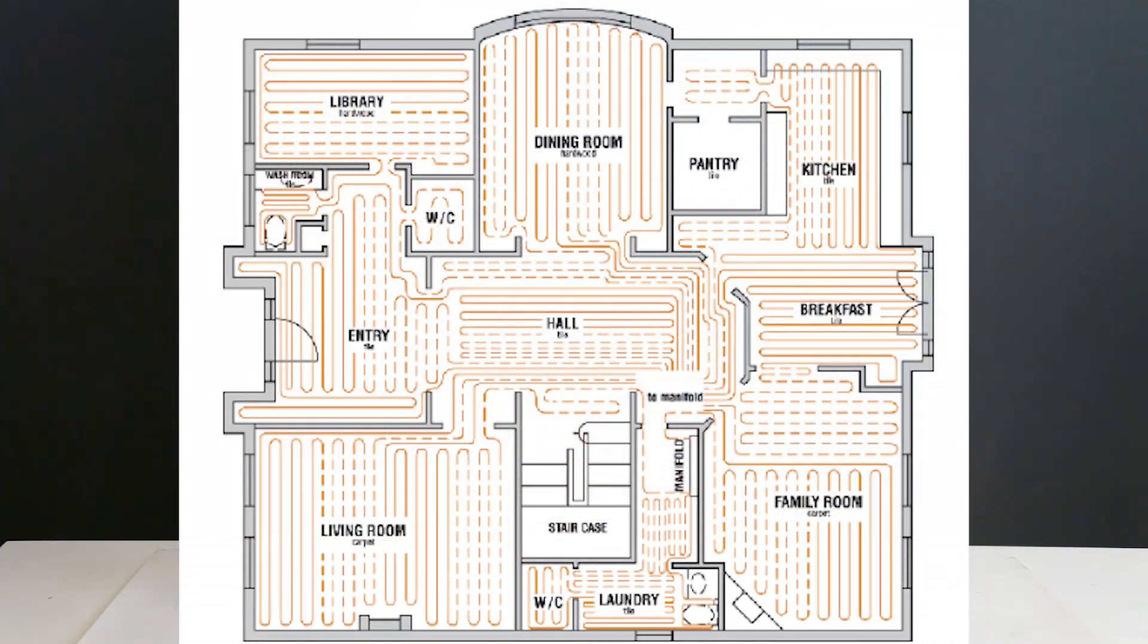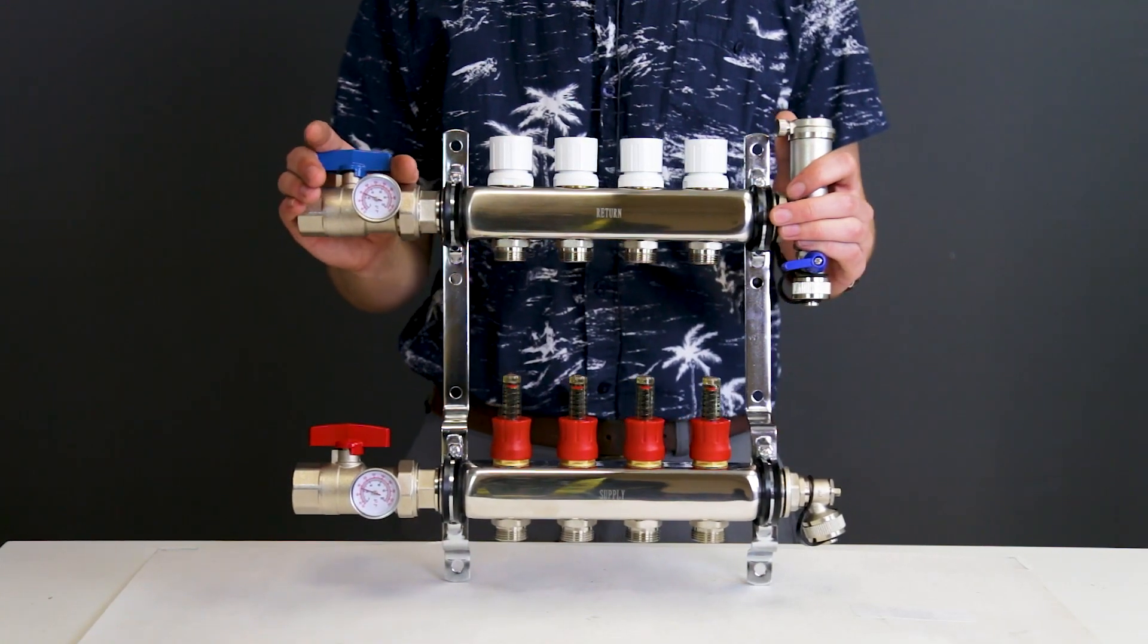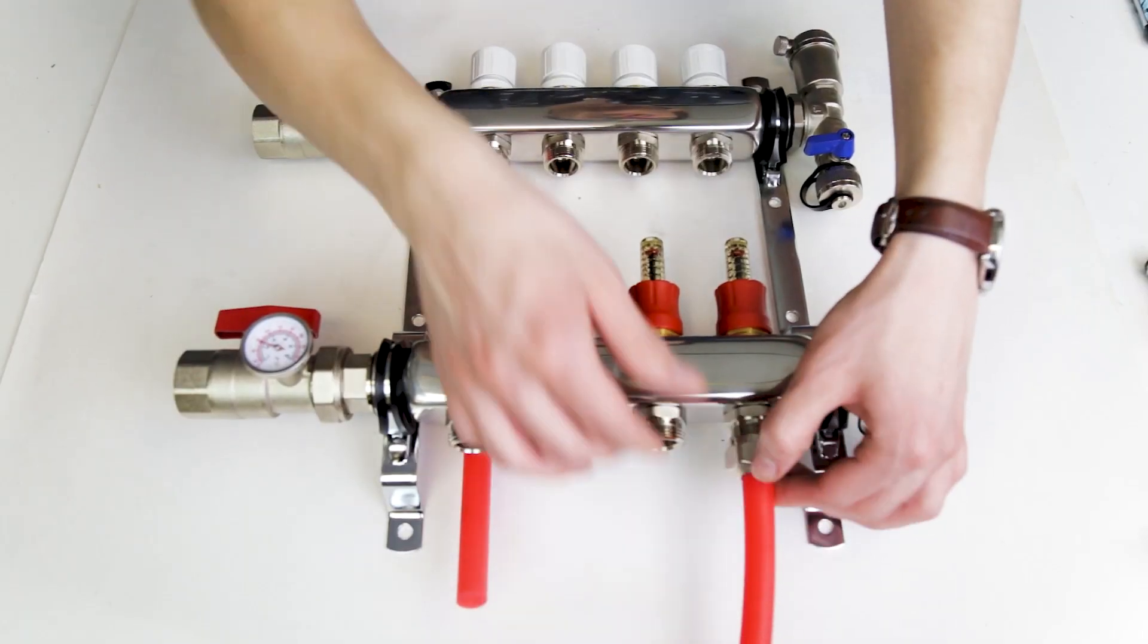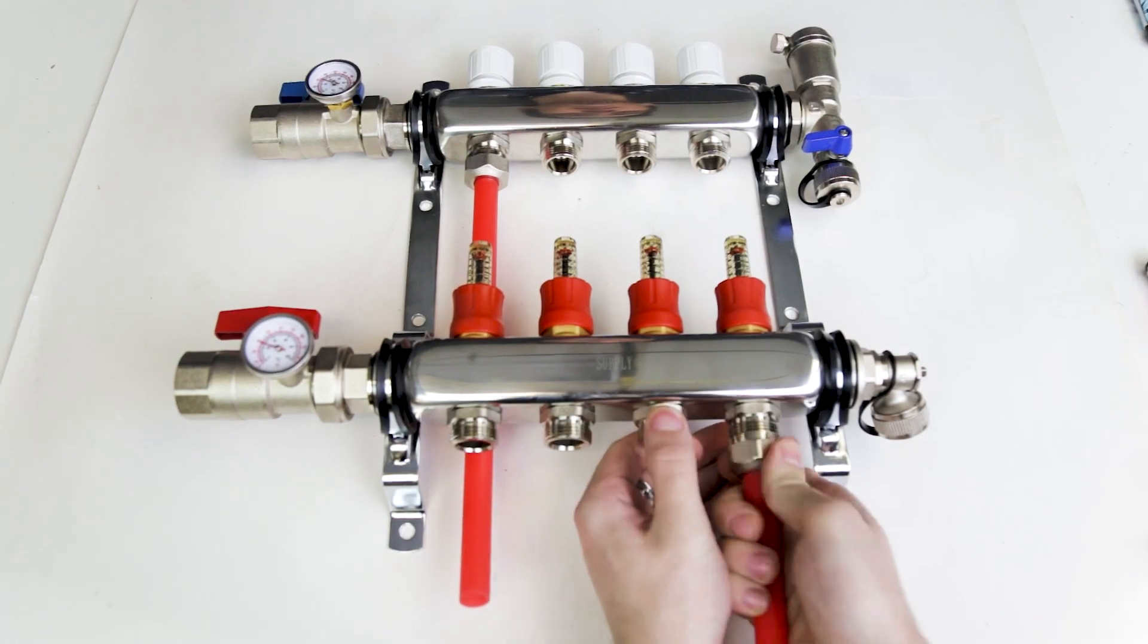When you're deciding where your manifold will go, you want to choose a location that is as central as possible to the circuits. Make sure you allow at least a couple of feet off the ground to accommodate the piping runs. Once you have mounted it to the wall and have connected all your piping, it's time to fill it.